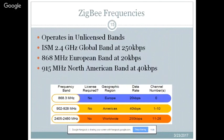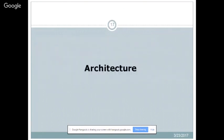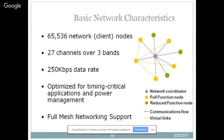ZigBee is designed for wireless controls and sensors, operating in PAN and device-to-device networks for small packet devices — controlling light switches, thermostats, and appliances. The basic architecture features 64-bit long addressing accommodating around 65,000 devices, 27 channels over 3 bands, a maximum data rate of 250 Kbps, optimization for time-critical applications, power management, and full mesh networking support.